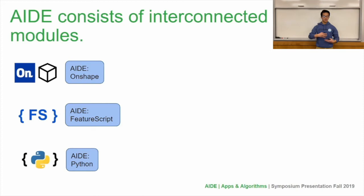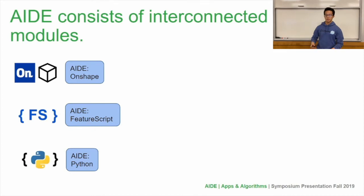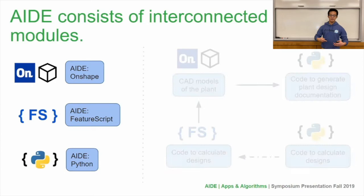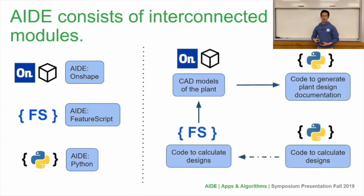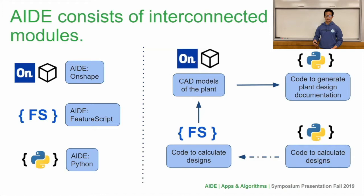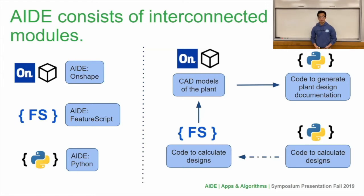The way that AID works is it is a system of interconnected modules. This semester we're still using Onshape to build our plant designs, but we have moved to a slightly different structure for the coding side. Our new structure is a bit more linear than in previous semesters. AID Python is still going to be writing code to calculate plant designs within Python, and AID FeatureScript is going to be replicating the Python code within FeatureScript so that it can be used in Onshape. Calculations from FeatureScript then move into our CAD models built by AID Onshape, and these completed designs are finally input into a documentation engine in Python, which will provide instructions for constructing the plant.